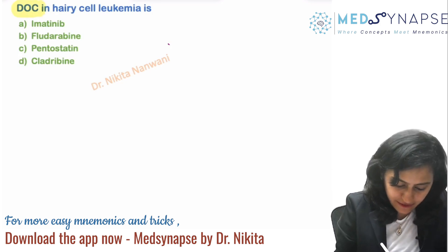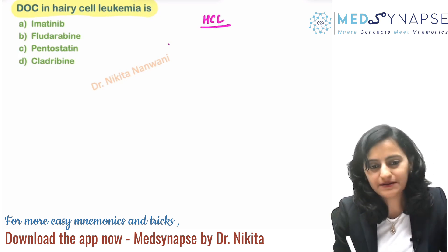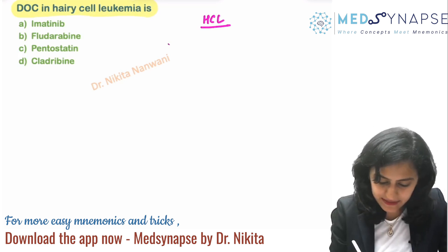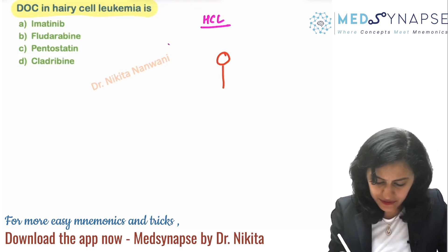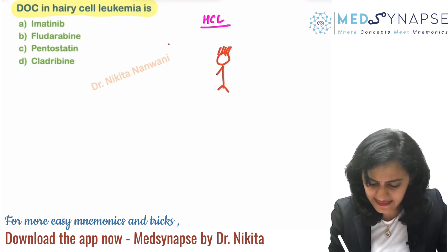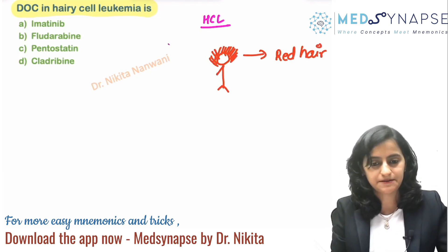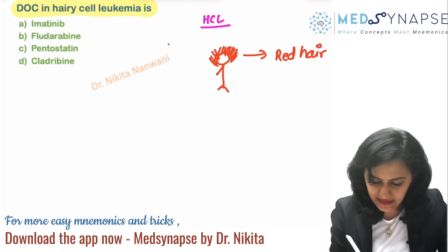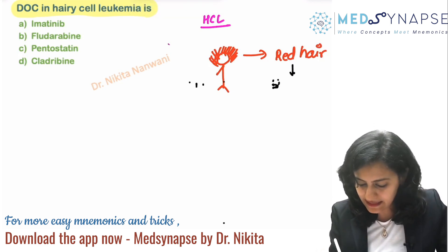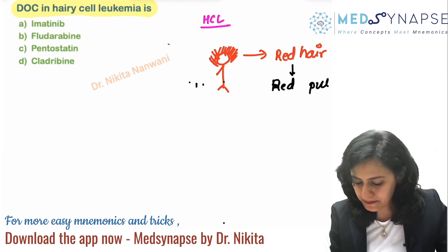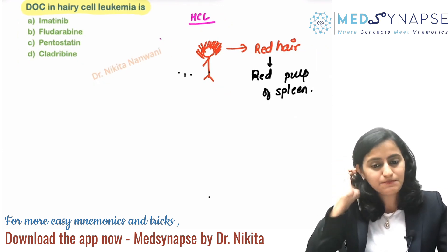The question is: what is the drug of choice in hairy cell leukemia? For hairy cell leukemia, remember it as imagining a person who is entirely clad with hair — red colored hair. This is to remember that hairy cell leukemia affects the red pulp of the spleen rather than the white pulp of the spleen.